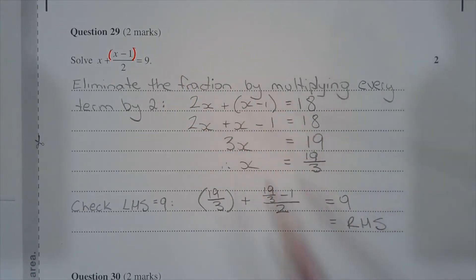Next, expand the brackets. There's not much that needs to be done there apart from just removal of the brackets. So 2x plus x minus 1 is equal to 18.